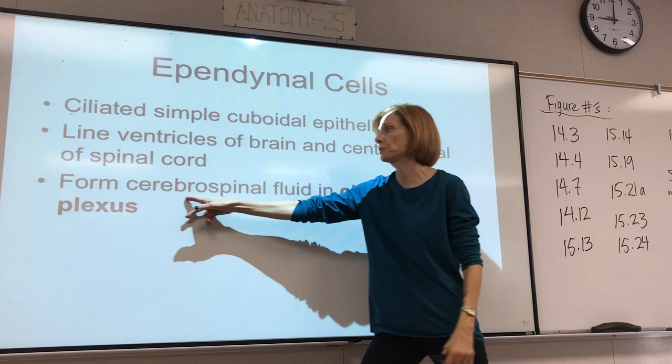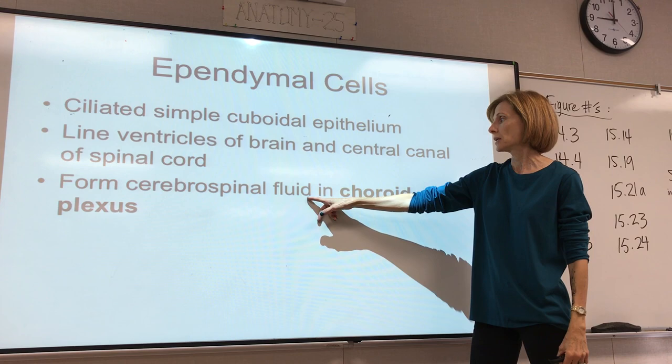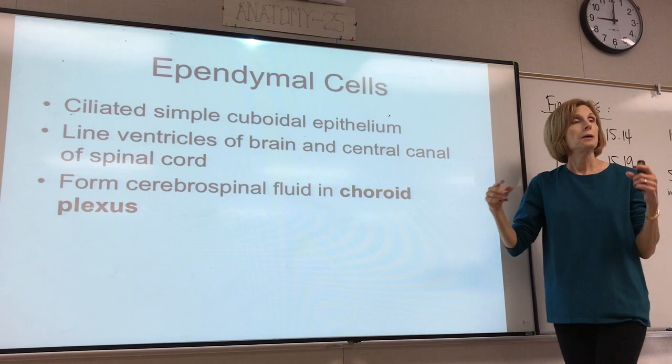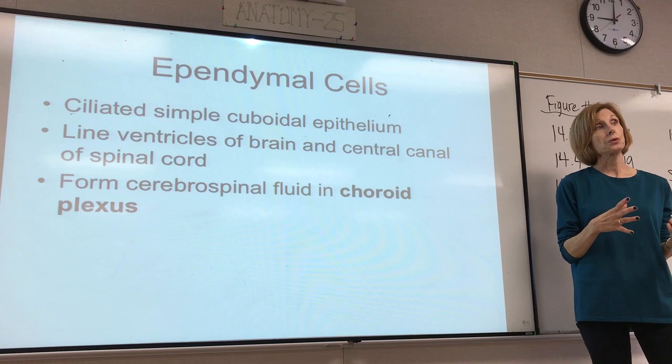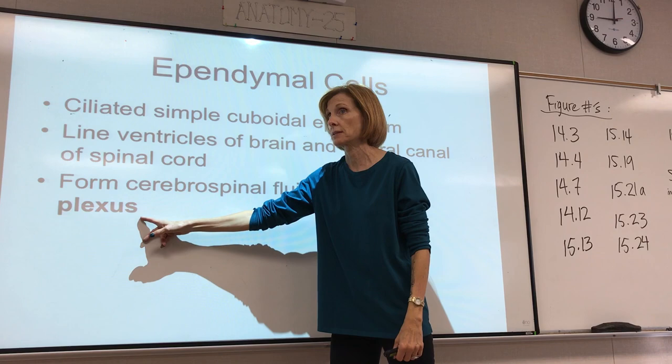Ependymal cells make cerebrospinal fluid, or CSF, which we will talk about more next week. Each ventricle of the brain has an area called the choroid plexus, and that is where the cerebrospinal fluid is made. So these cells have an important role in making CSF in the choroid plexus.